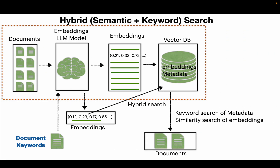That's very similar to — exactly similar to — semantic search. Going back to the solution design: in addition to the embeddings, we also insert metadata into the vector database. When we query, in addition to the document, we also provide keywords. The search is two-part — this hybrid search. First, it does the keyword search, filtering out all documents that do not have the keywords. Then, from the remaining documents' embeddings, it does a semantic search. That's how we can perform a hybrid search, combining the functionality of semantic and keyword search to make it even more powerful. That's all for this video, thank you very much.